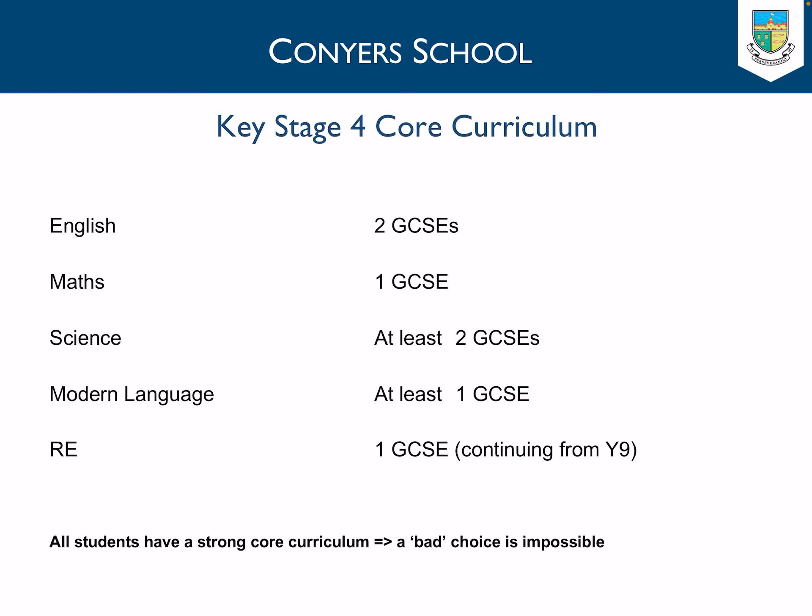At Conyers, we offer a very strong core curriculum, so bad option choices for students are impossible, because these are the subjects they study alongside their option choices. Students study two English GCSEs — English Literature and English Language — one Maths GCSE, at least two Science GCSEs, one Modern Foreign Language, and their RE GCSE, which they have started to study this year in Year 9.